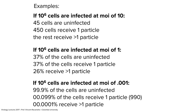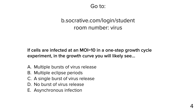If you only remember one thing: an MOI of 10 doesn't mean every cell receives 10 virus particles — it simply is what you add to the culture. If cells are infected at an MOI of 10 in a one-step growth cycle, you will likely see a single burst of virus release. MOI of 10 means basically all cells are infected and you get one burst — there are no more cells left to infect. Multiple eclipse periods or multiple bursts would require an MOI of one or less. Infecting all cells together makes it a synchronous infection.